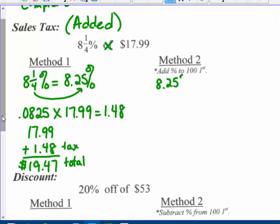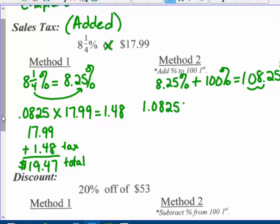Add 8.25% plus 100% because I'm going to pay 108.25% for that shirt. Changing that percent to a decimal, I multiply 1.0825 times $17.99. I'm not going to find the individual tax, I'm going right to the total.